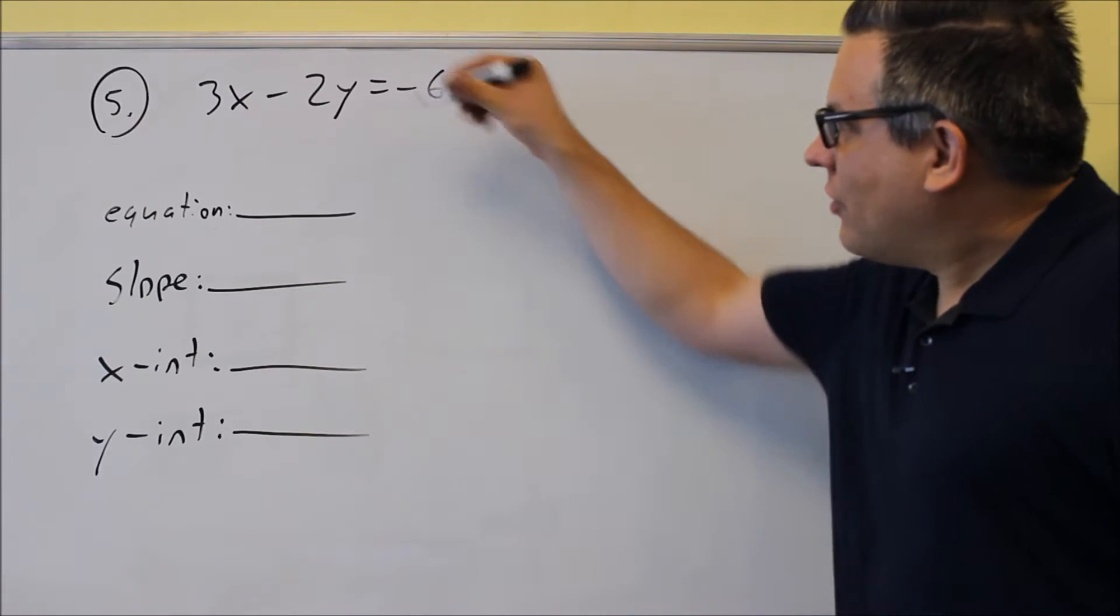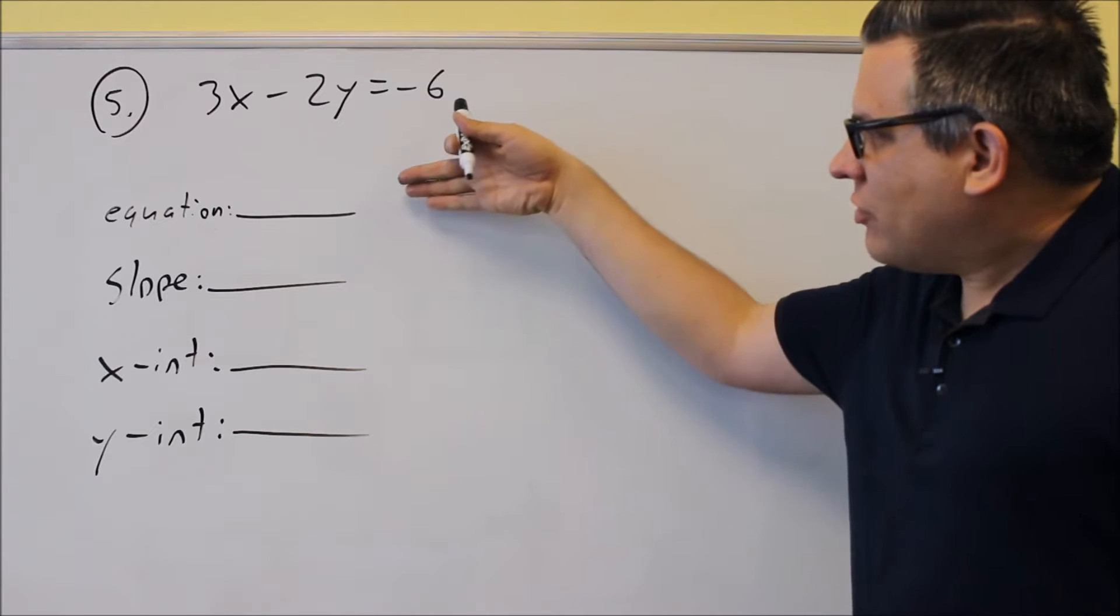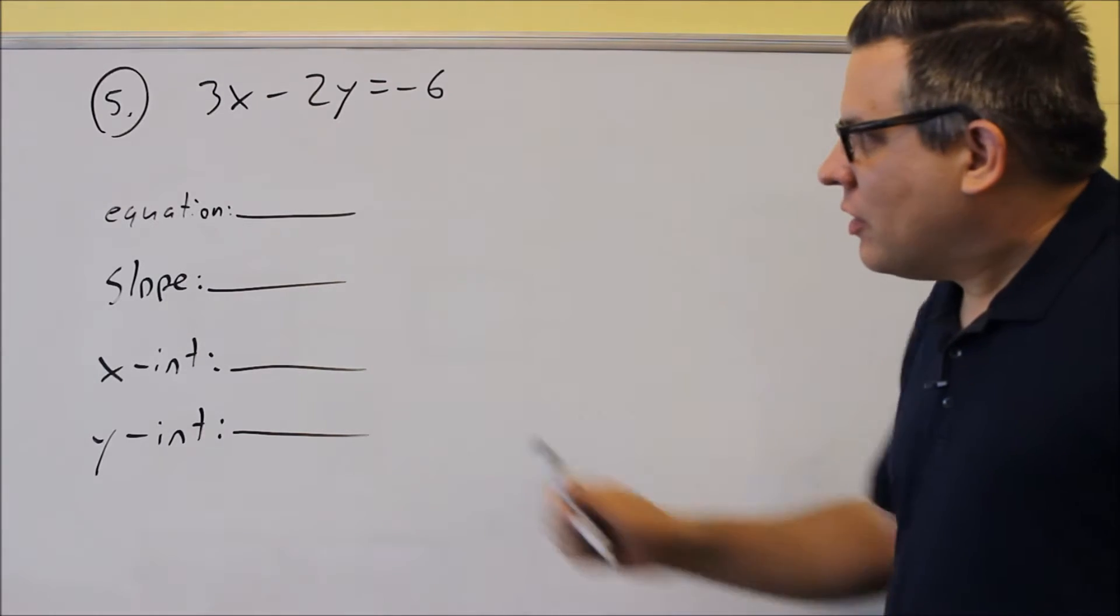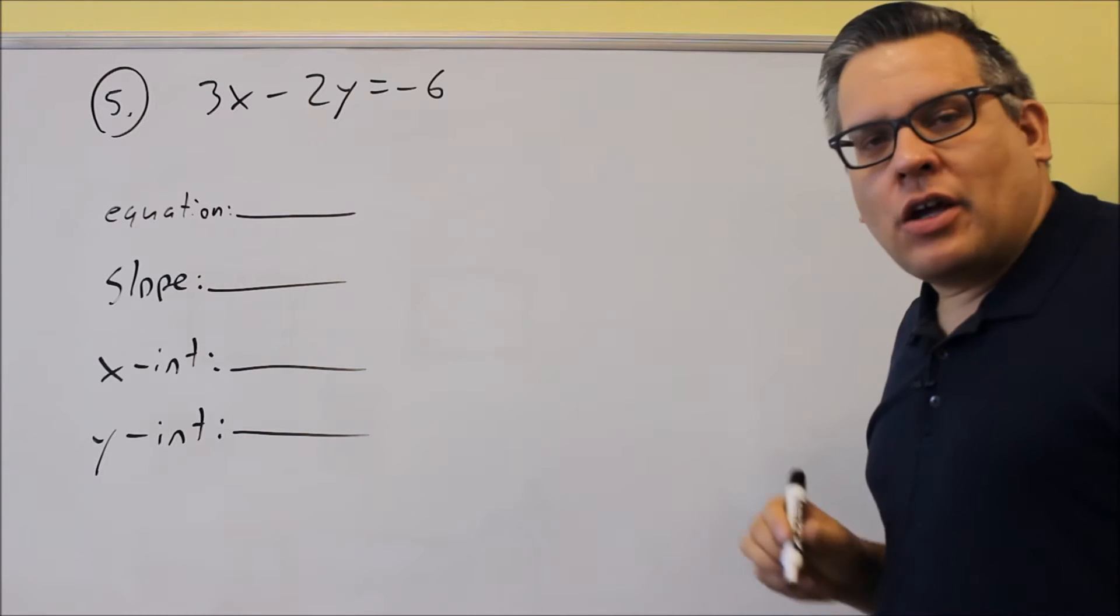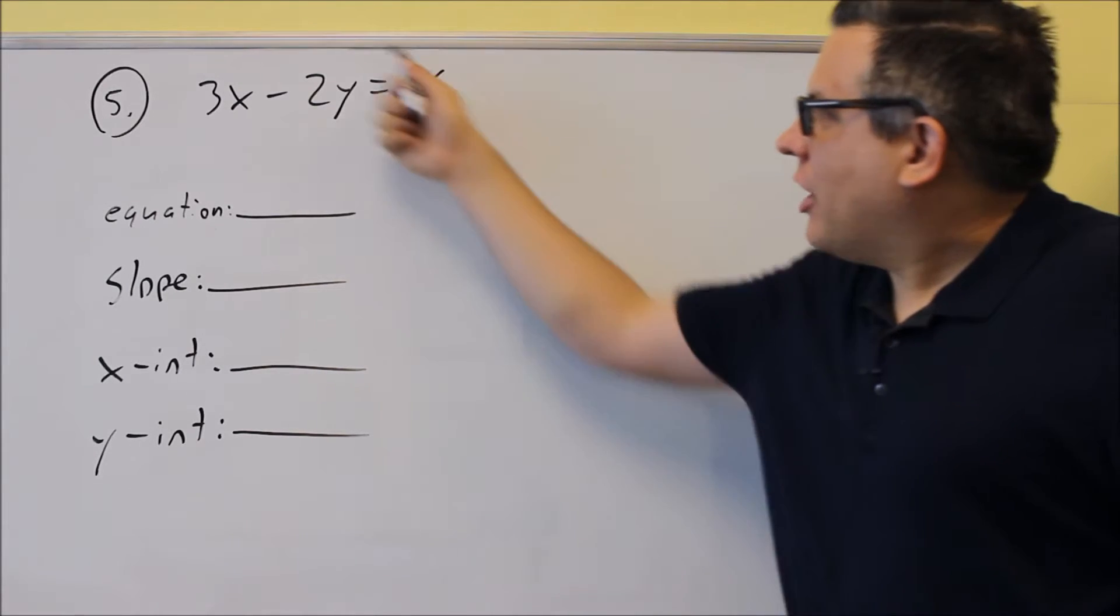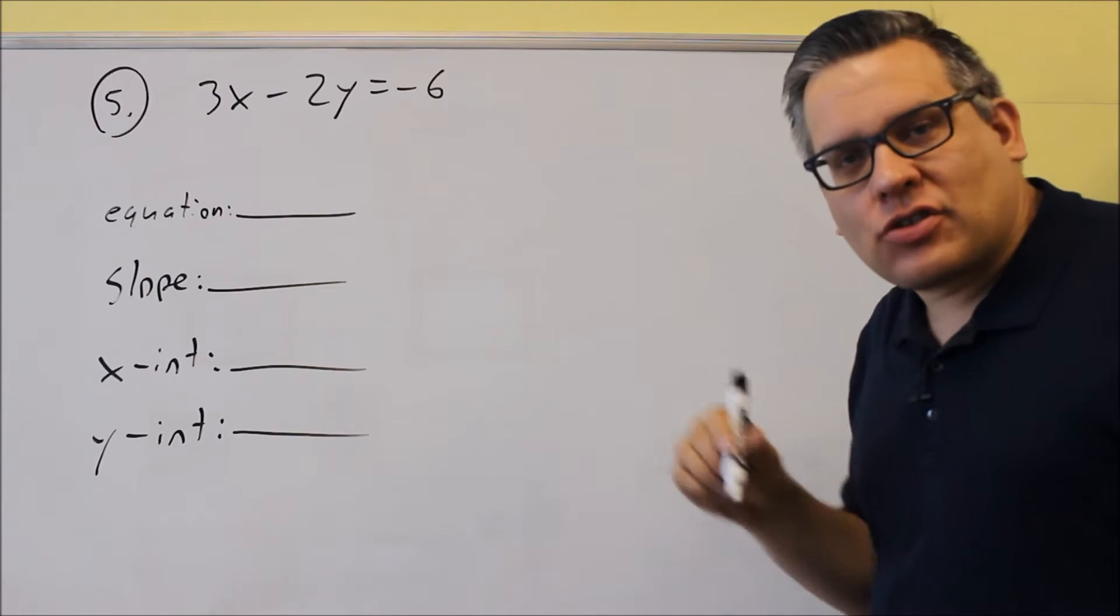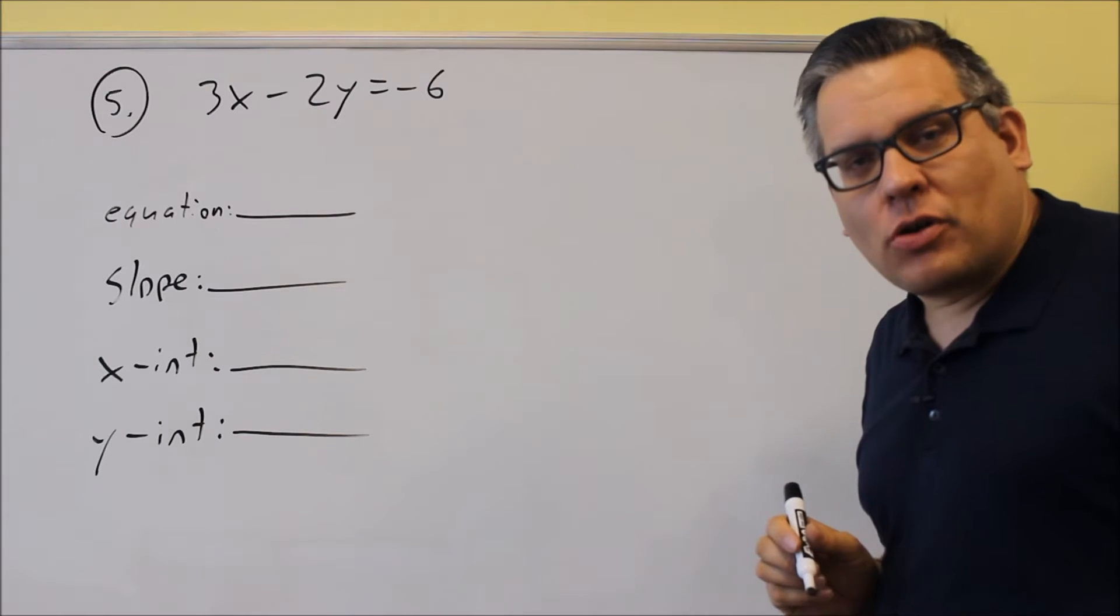Okay, for number five, this involves lines, and so this question asks you to fill in this information, and then they also want you to graph this one. The equation that they're referring to is they want you to write this in slope-intercept form. So that's y equals mx plus b. So when you have this one, what you want to do is basically just solve for y and make sure the x term comes first, and when you do, you'll automatically have it in slope-intercept form.